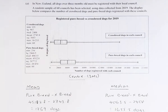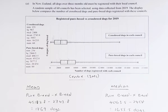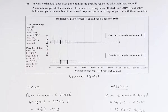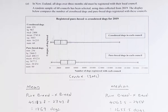In New Zealand, all dogs over 3 months old must be registered with the local council. A random sample of 60 councils has been selected using data collected from 2019. The display below compares the number of crossbreed dogs and purebred dogs registered with each council. There are 2 graphs — one is called the boxplot and the other is called the dotplot — and we are going to analyse them both.